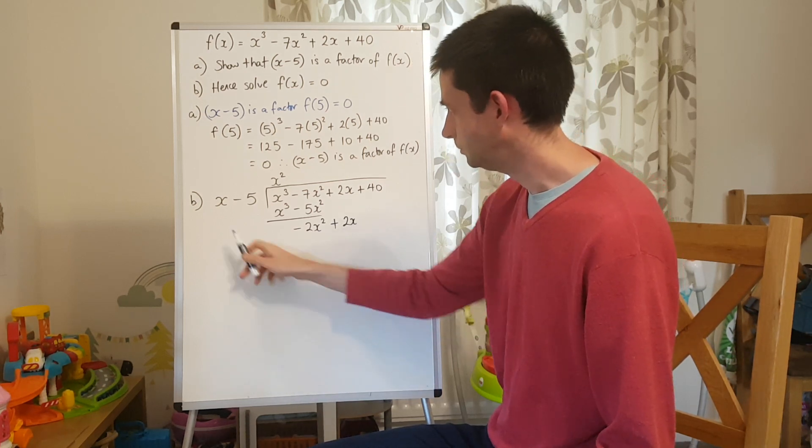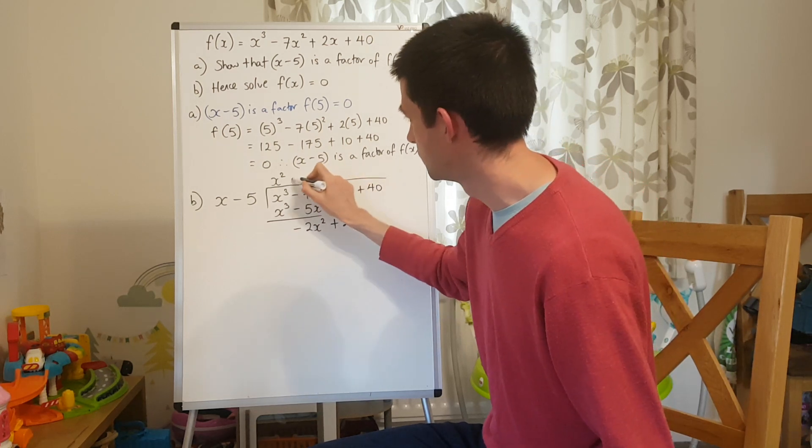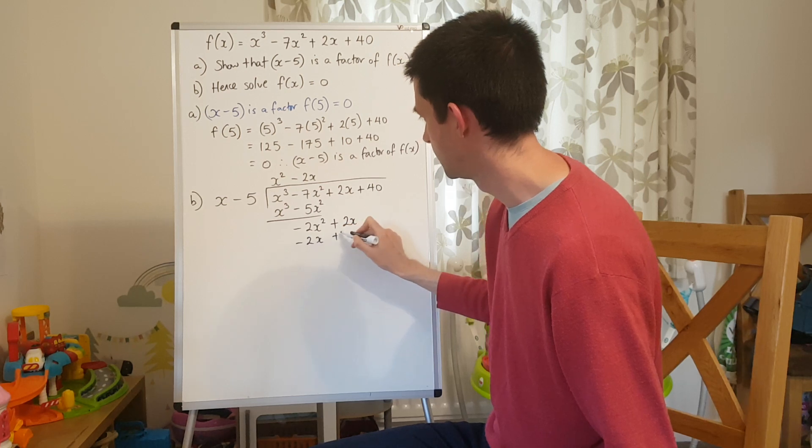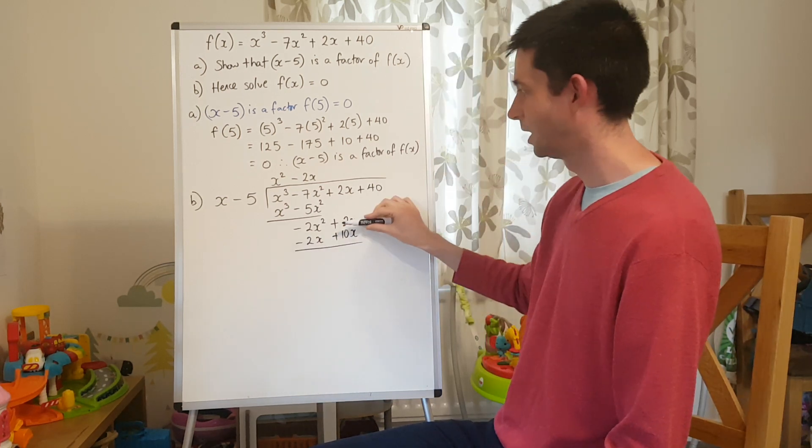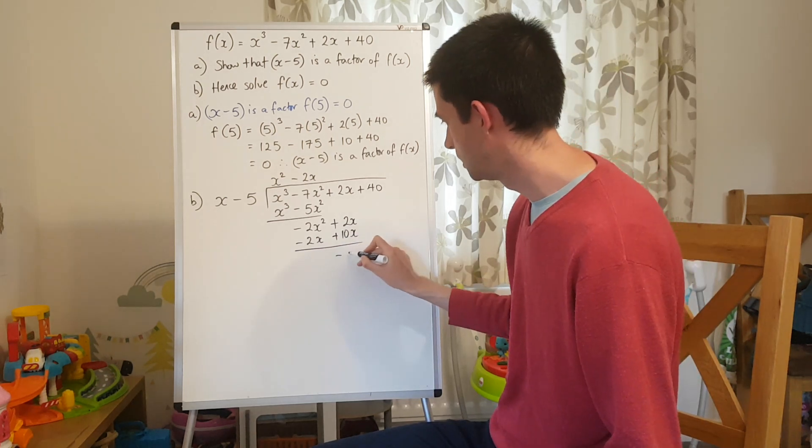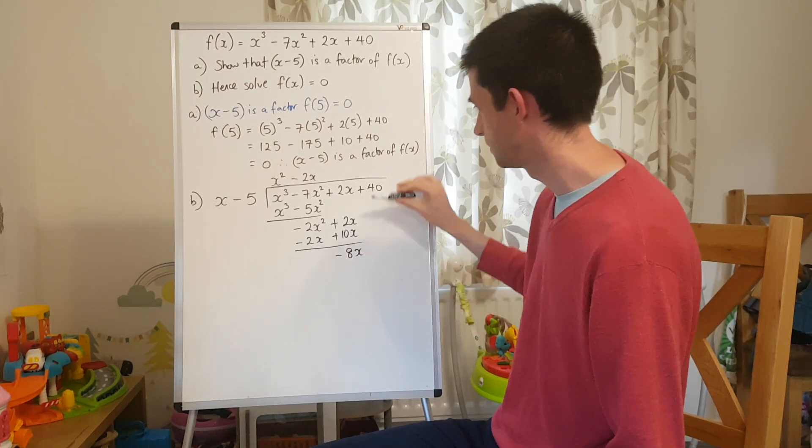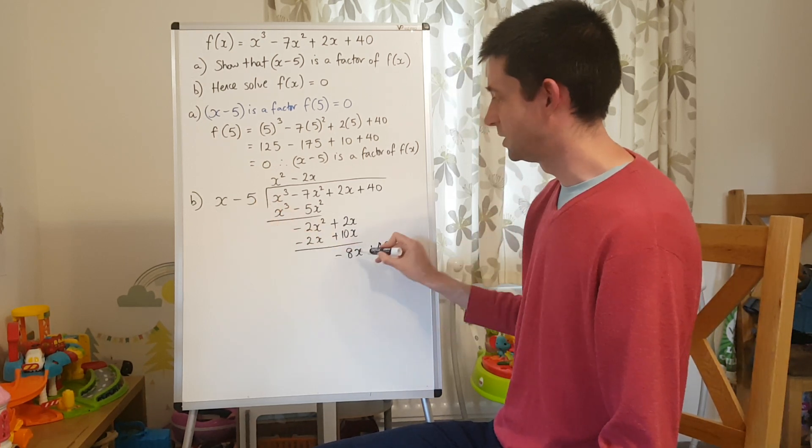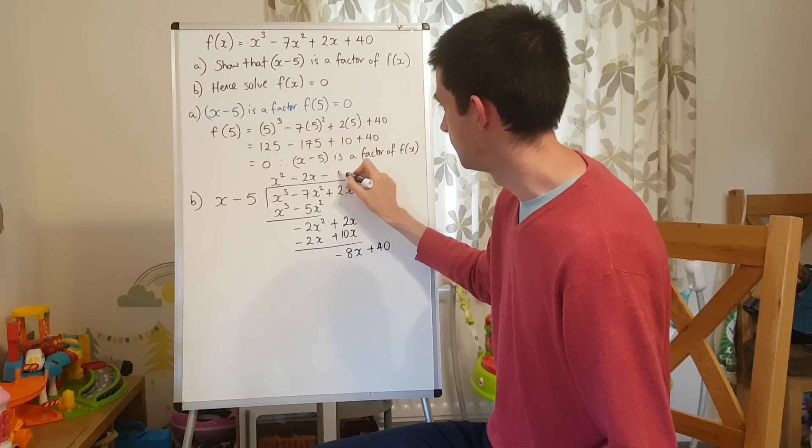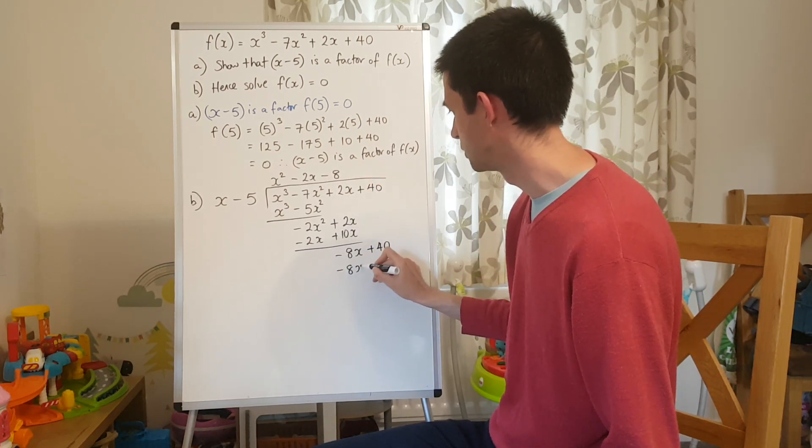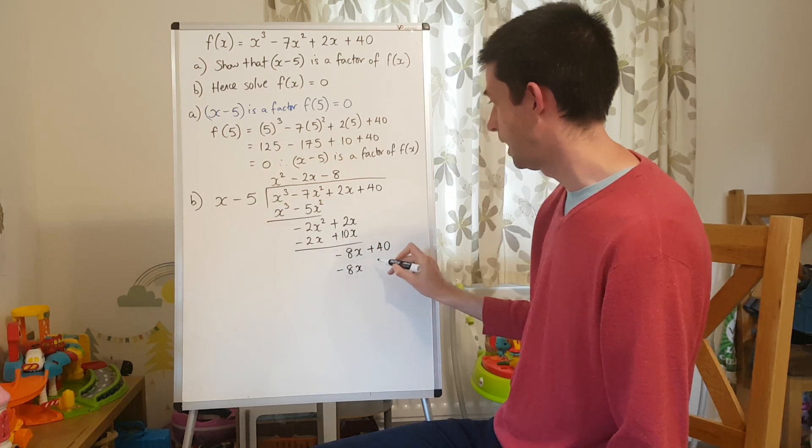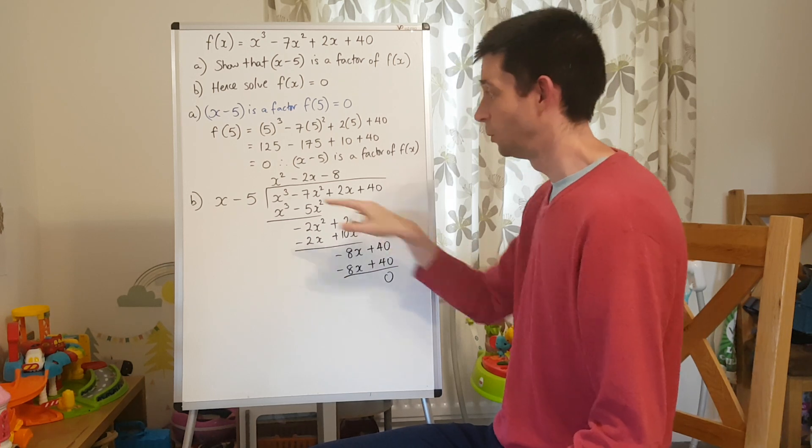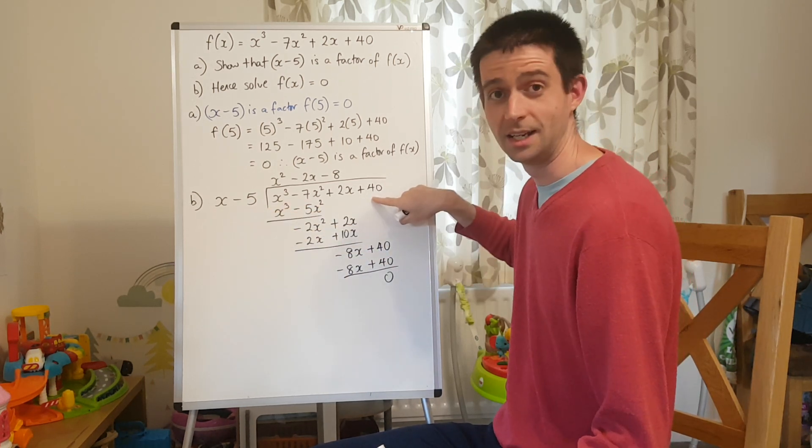And repeat. x into negative 2x squared is negative 2x. x plus 40, and as expected, we have a remainder of 0, which means x minus 5 goes exactly into this function here.